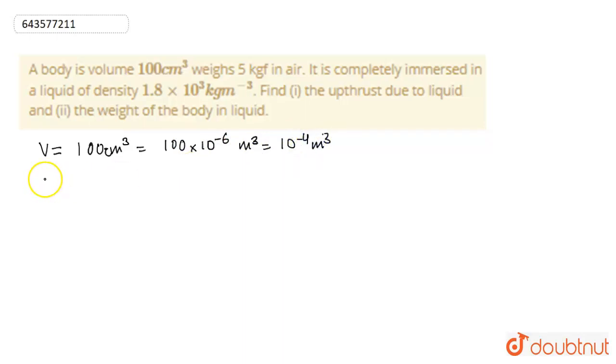Now, the density of the liquid is clearly given as density D or we can write it as ρ is given as 1.8 × 10³ kg/m³.